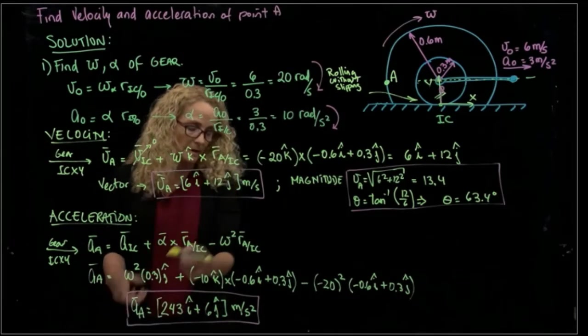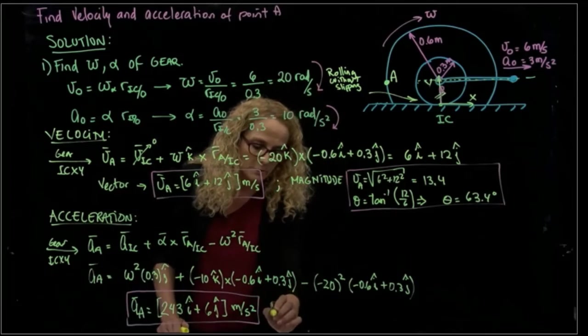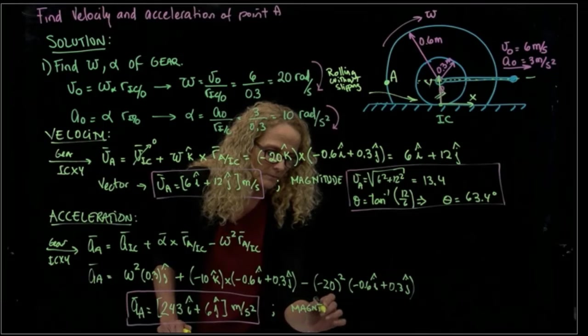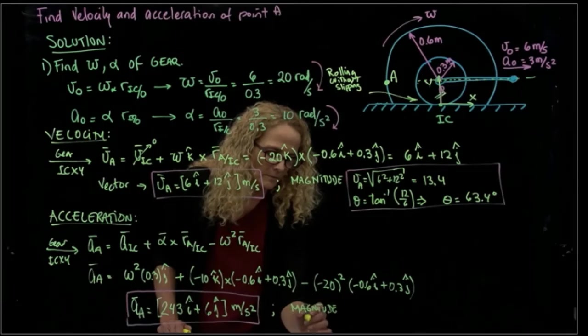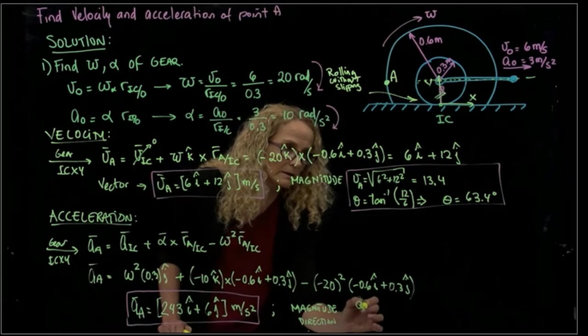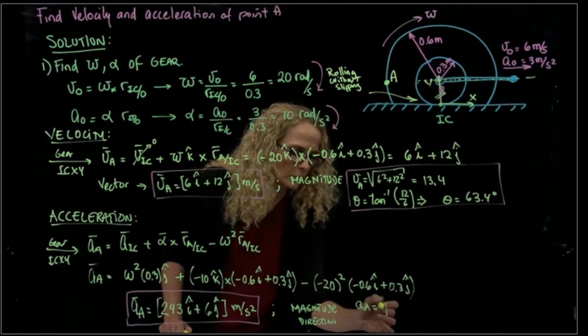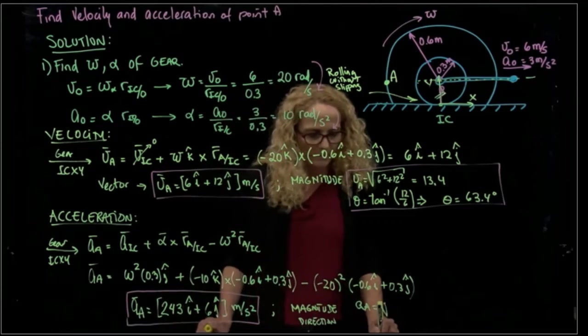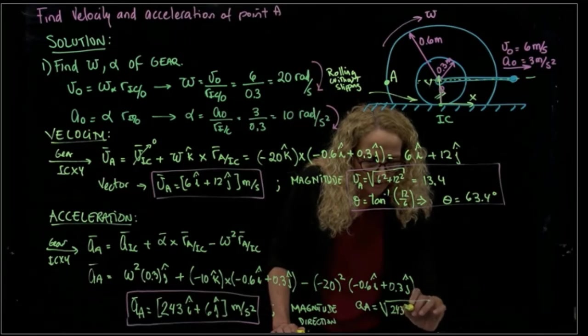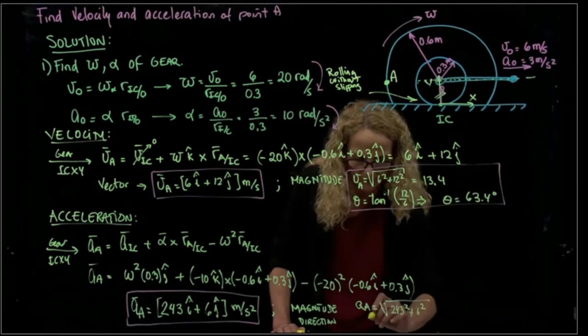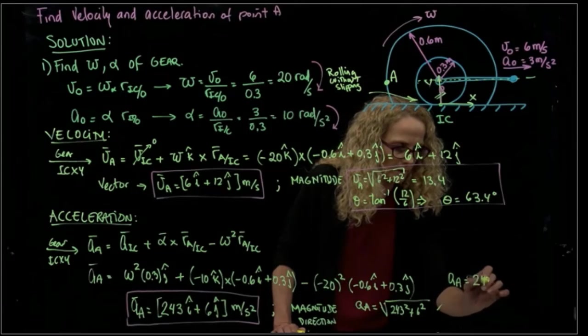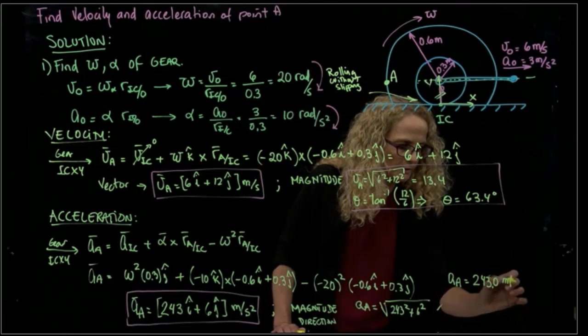And then as I did with the velocity, I can write that in terms of magnitude and direction. And then I have the magnitude will be the square root of those two values that I just wrote there, which is 243 squared plus 6 squared. So the magnitude of that acceleration equals 243.3 meters over seconds squared.